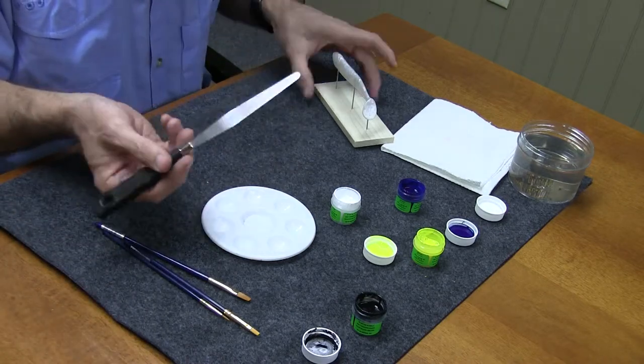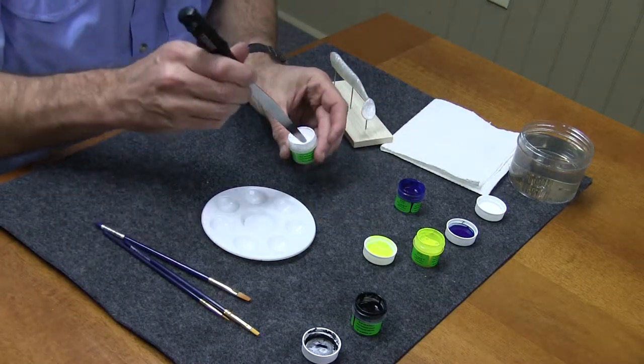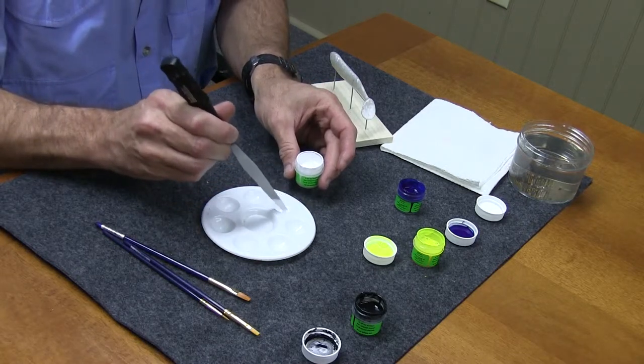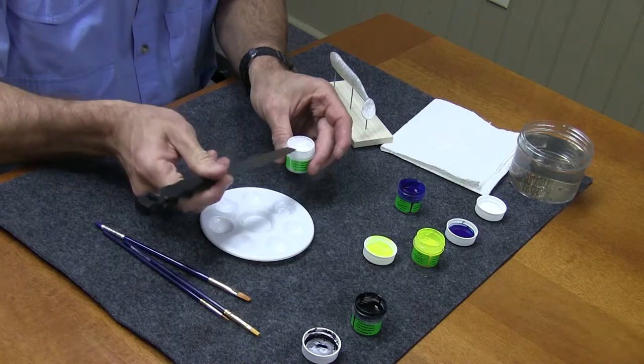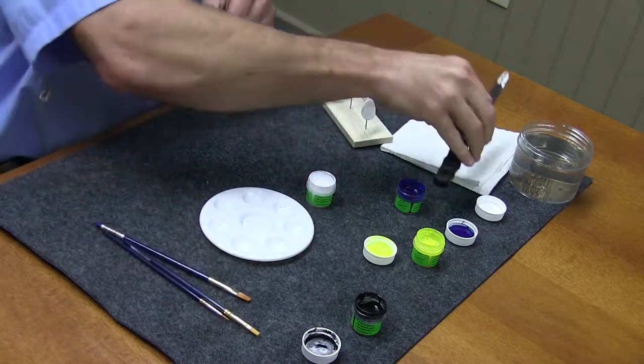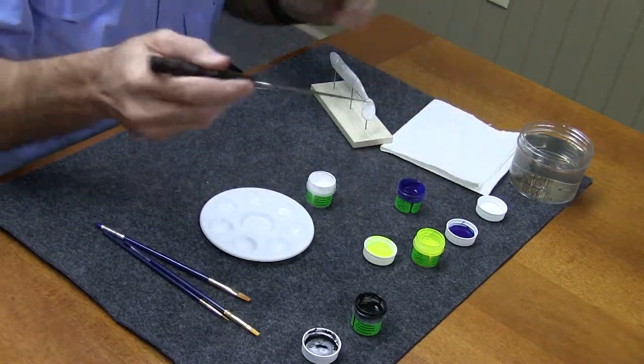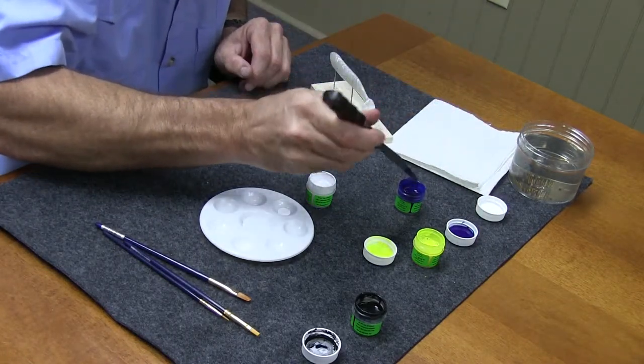I've got a small spatula you can use, or you can use a knife or spoon or whatever, but I'm going to get just a few drops of white in here. It doesn't take much. The paint's really strong. So we've got our white, and let's get just a little bit of blue, it doesn't take much.